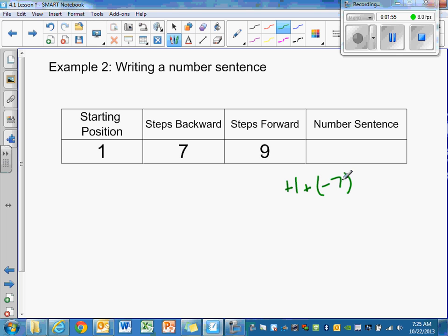Don't get confused by the parentheses. You will see that all the time when dealing with integers to separate the signs. So we had starting position was 1 plus we moved backward 7. Then we're moving forwards 9 and we ended on a positive 3. So that is my number sentence. Very simple.